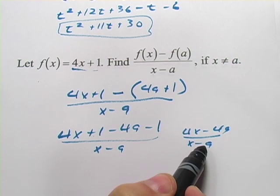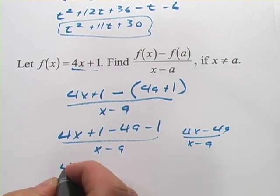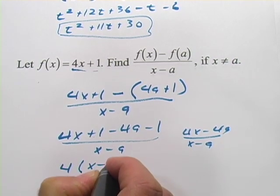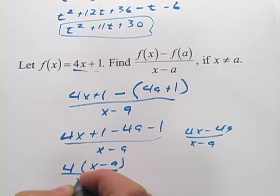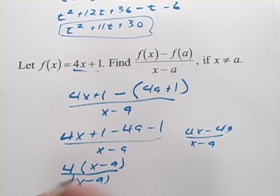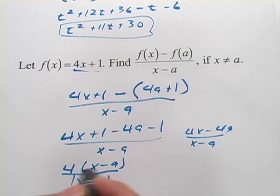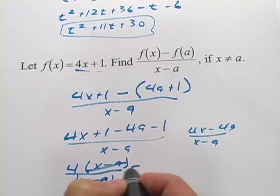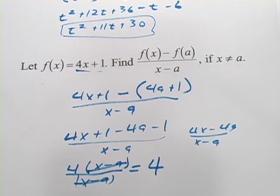But, we can pull a 4 out of there and we would end up with 4 times x minus a over x minus a. And those x minus a factors cancel. And so, all of that comes down to just 4.